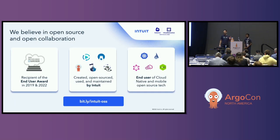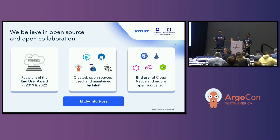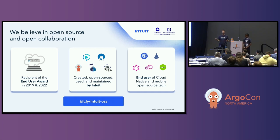All of this would not be possible without open source. You've probably heard about Argo, since you're here today — that's one of the open source projects that we're heavily invested in. But there are a number of other ones that we maintain, some that we created, some that we contribute to. Whatever we do, we try and do open source upstream first to make sure we don't have a downstream fork, and we give back to the community. Thanks to that, we've also been acknowledged as the end user recipient twice by CNCF, lastly in 2022.